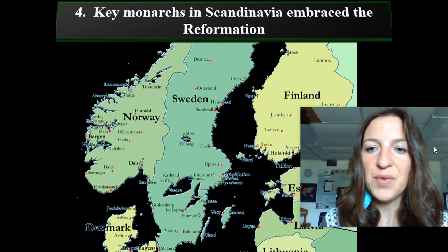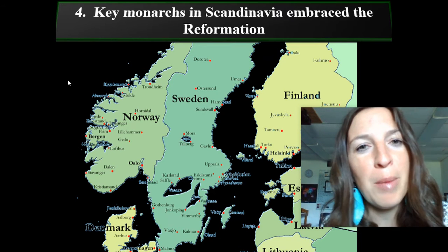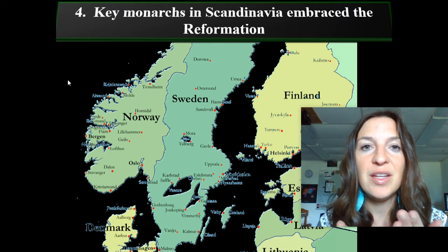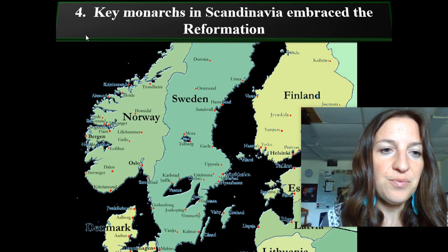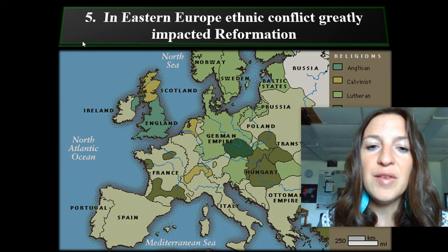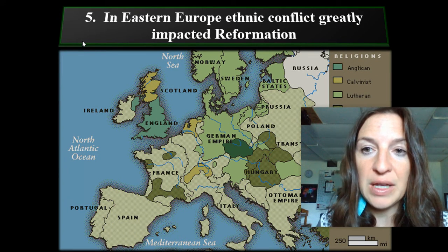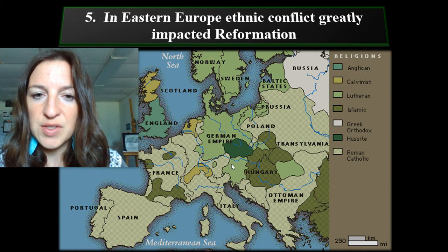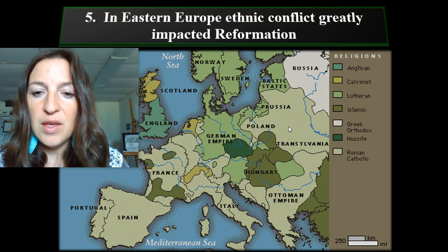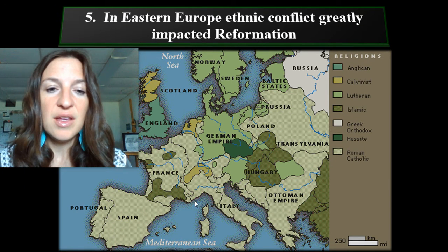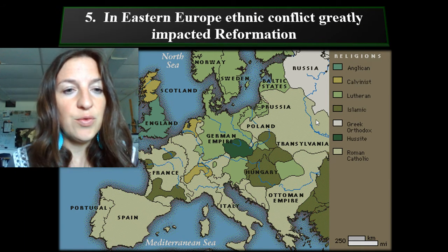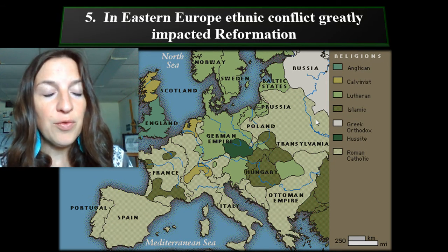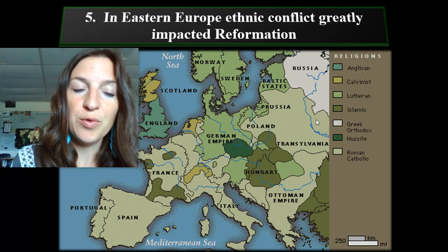In Scandinavia, key monarchs embraced the Reformation. And remember, when you read and write 'Reformation,' think: people reading the Bible for themselves, having an individual relationship with Jesus. Number five: in Eastern Europe, ethnic conflict greatly impacted the Reformation. There were different groups — you can even see Islamic groups — interacting in Eastern Europe, some breaking away from Catholicism, some wanting to reform Catholicism from within.